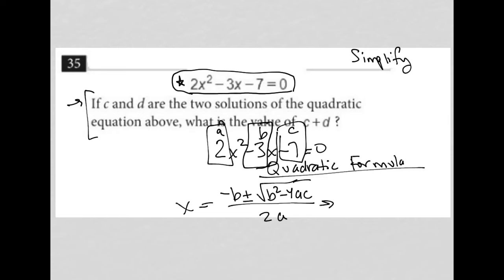So I'd have negative B would make that a positive 3 plus minus square root. B squared, well that's negative 3 times negative 3, which is 9, minus 4 times A, which is 2, times C, which is negative 7, all over 2A.